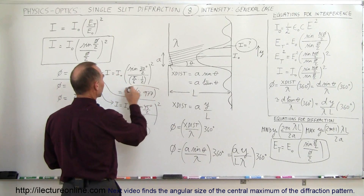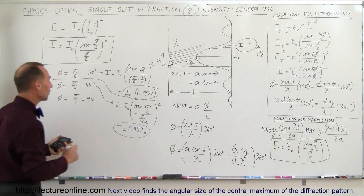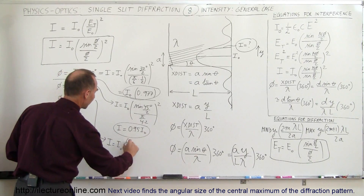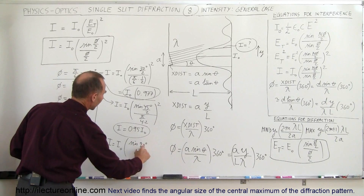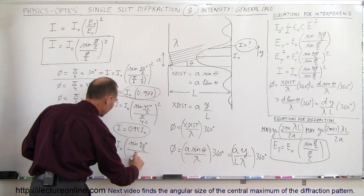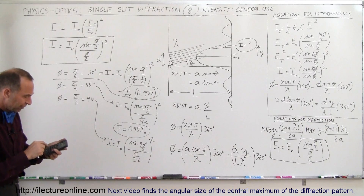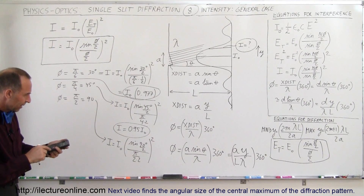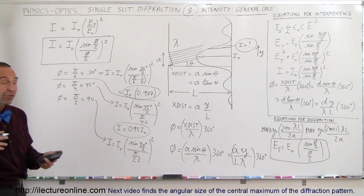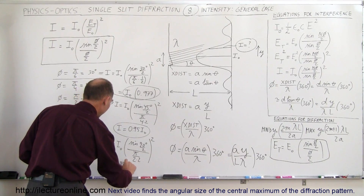At 90 degrees, I equals I sub nought times the sine of 90 degrees divided by 2, divided by pi over 2 divided by 2 — the denominator in radians — the whole thing squared. Taking the sine of 45 degrees, multiplying by 4, dividing by pi, and squaring, we get 0.81. So I equals 0.81 I sub nought.